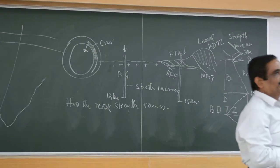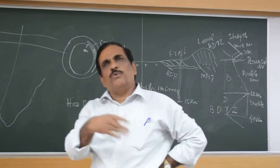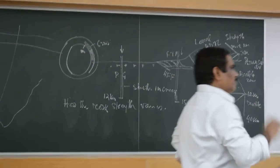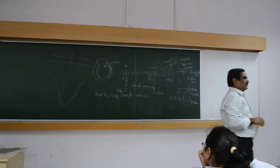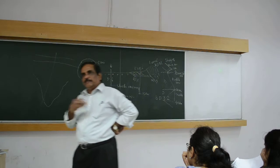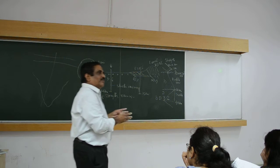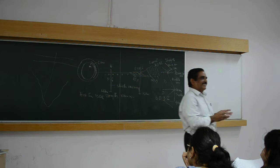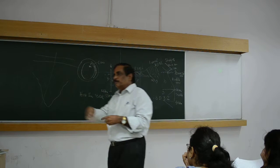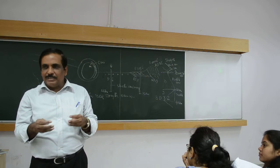Now I will give you an example. Suppose you are going to an area where a lot of folds are there — suppose Aravalli, or Ambaji area. You go to those areas and you find a lot of folds. I ask you: whether it represents a ductile zone or a brittle zone. What is your interpretation?